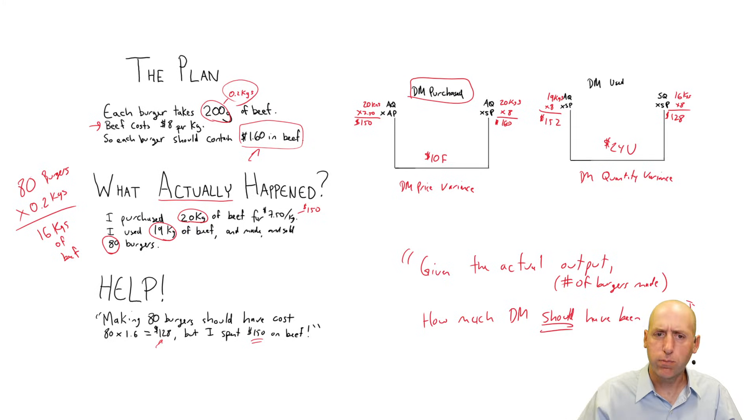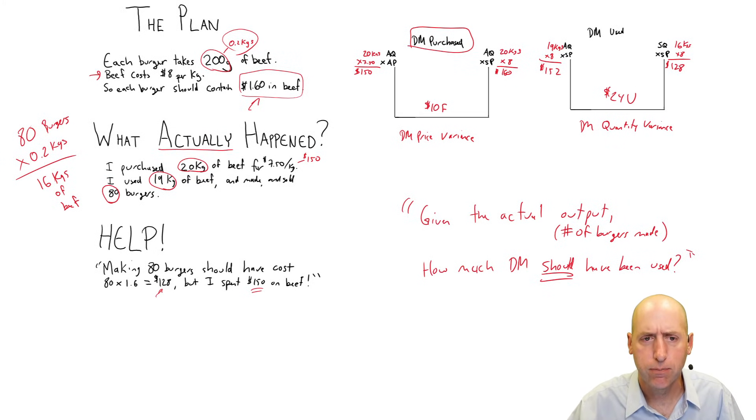So once Bill and I had gotten to the bottom of this, I said, okay, you were right. You blew the budget, you overspent. Now he had sort of overrated the overspending. He thought he was $22 unfavorable overall. Indeed, if you combine these two variances, he's only $14 unfavorable. What's the difference? Well, he's still got a kilogram of beef that hasn't blown the budget.